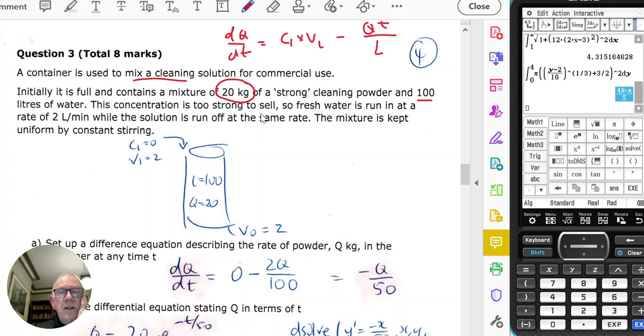Then we have a concentration, fresh water is going in, so my concentration in is 0, and the volume going in is 2 liters per minute, and it's run off at the same rate, so the volume out is 2. So dQ/dt is 0 minus 2Q on 100, which is negative Q on 50.